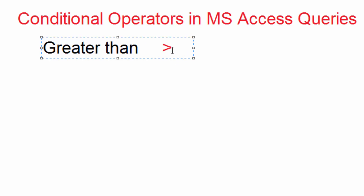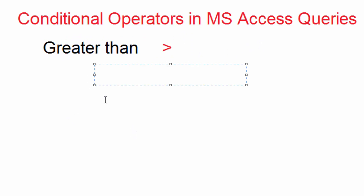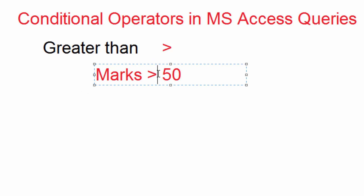For example, you can say look for marks greater than 50. In that case you'll write it like this: marks > 50. So you can see the first item is compared with 50 and this sign means look for the ones which are greater than 50.